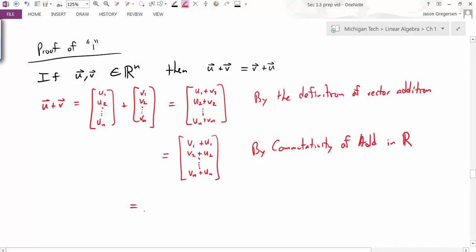But now I can take this expression and rewrite it as the vector v1, v2, dot, dot, dot, v_n plus the vector u1, u2, dot, dot, dot, u_n. Once again, by the definition, and I'll use some shorthand here, the definition of vector addition. So the definition of vector addition says that this thing is the same as this thing. This is how I do addition.